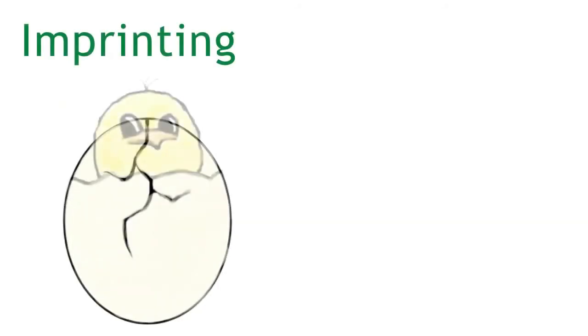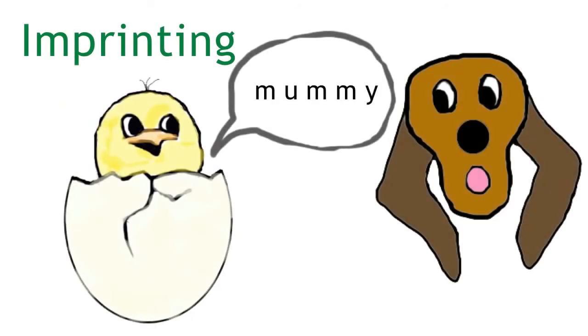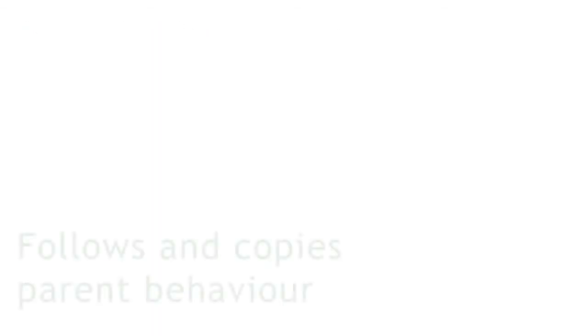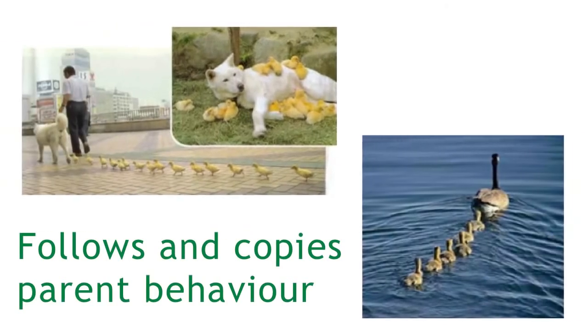Imprinting is another type of learned behaviour, where a very young animal fixes its attention on the first thing it hears, sees, or touches. The animal then follows the object around, which is usually its parent.